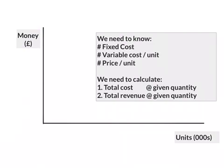You will place these on a graph made of two axes. The horizontal one is the number of units. In this example it's by thousands of units. The vertical axis is money or pounds in the UK.